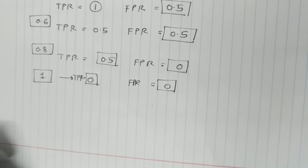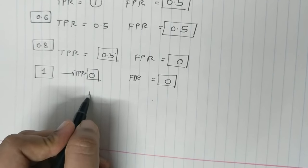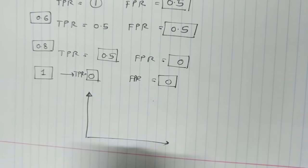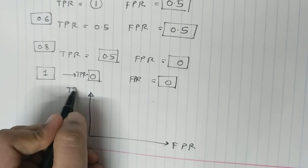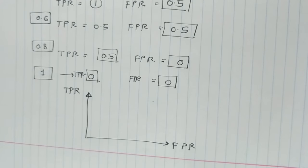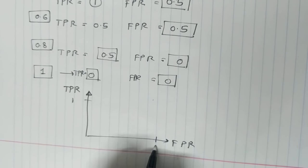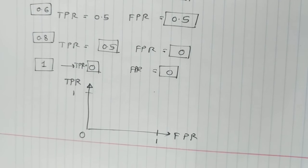I hope all of this is making sense. Now what we have to do is, since I have a set of points, I just have to plot these points on a graph wherein my x-axis would be my false positive rate. My y-axis would be true positive rate.